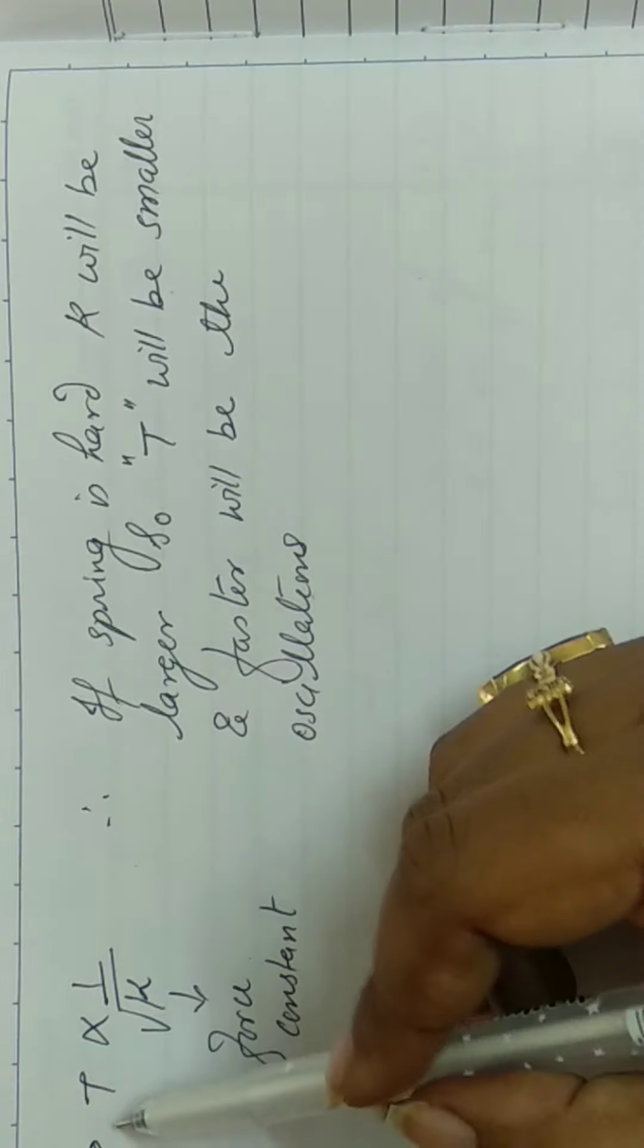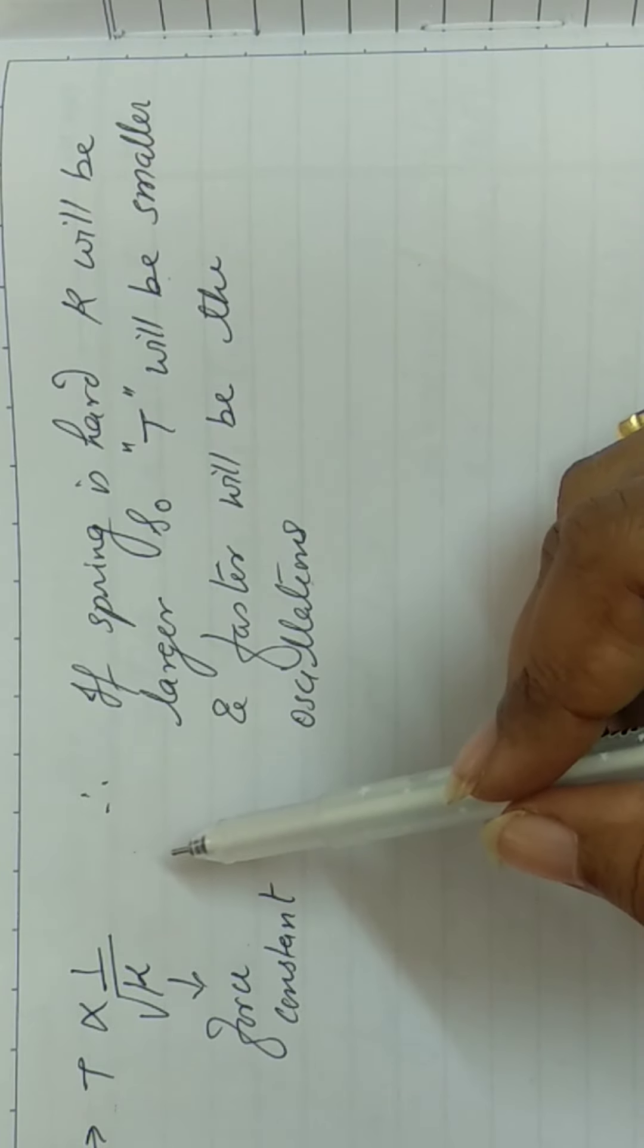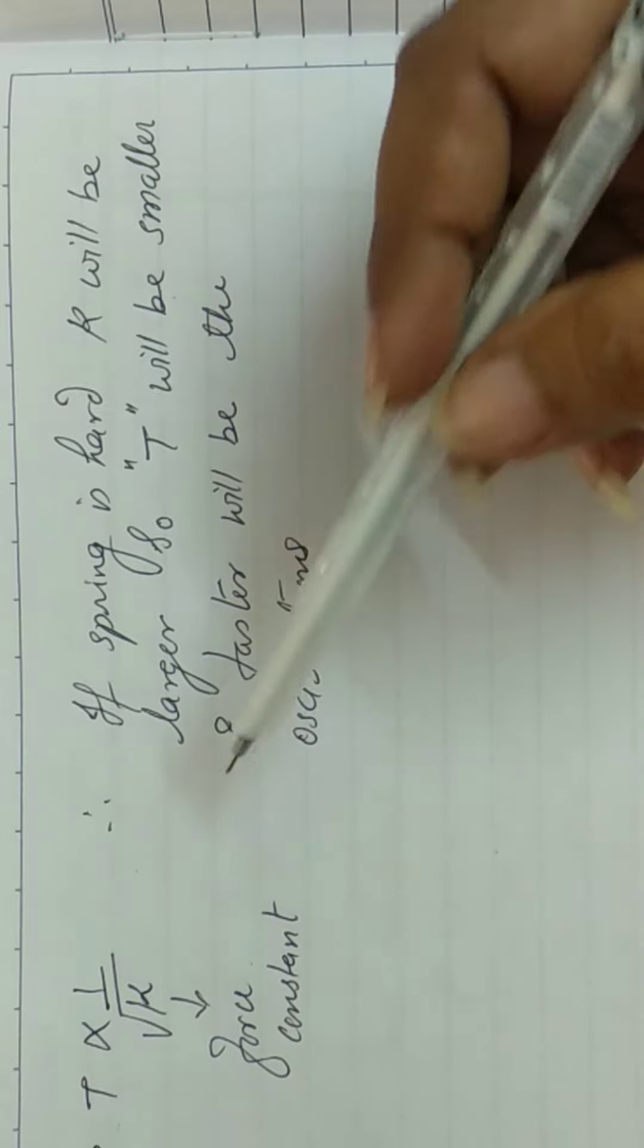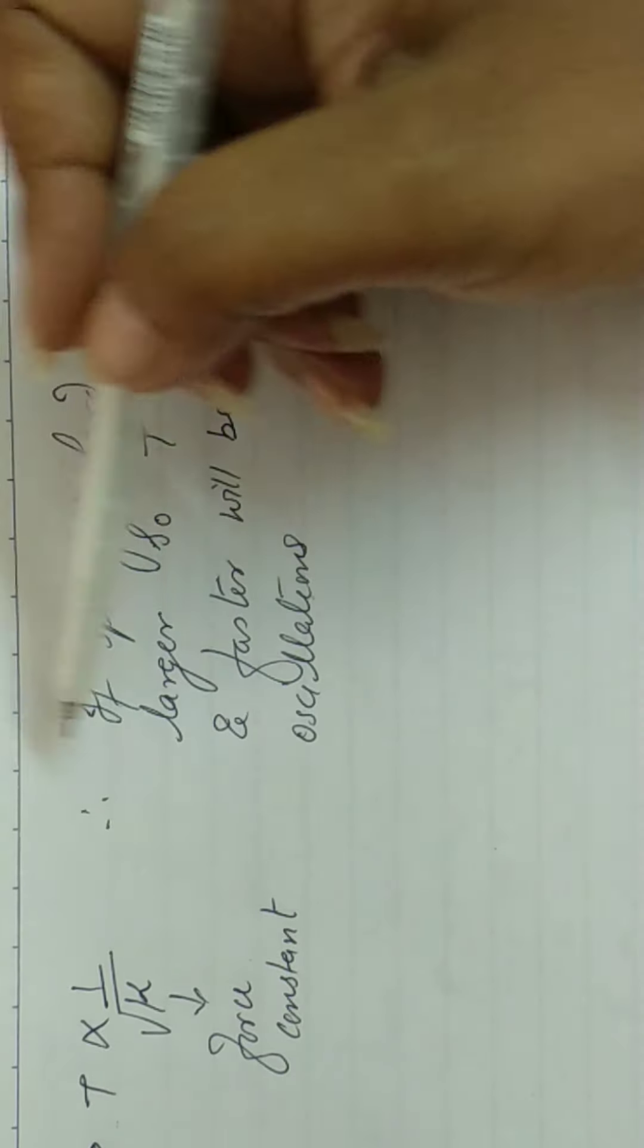Agar force constant bada hoota hai, toh periodic time will be smaller. Matlab time taken for one oscillation, ye spring yaisi vibrate karthi thi. Aapne jo mass laga ya tha, toh spring yaisi upar niche vertical oscillations kar rahe thi.